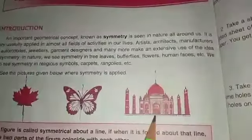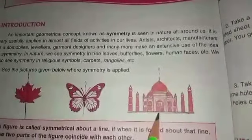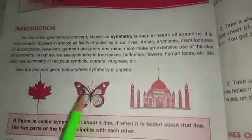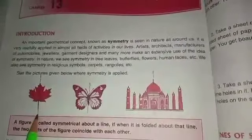Some shapes are given to us — this leaf, butterfly, and this historical monument, you all know Taj Mahal. Now look at this dotted line which shows the line of symmetry.